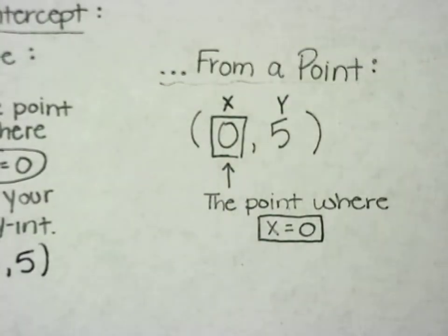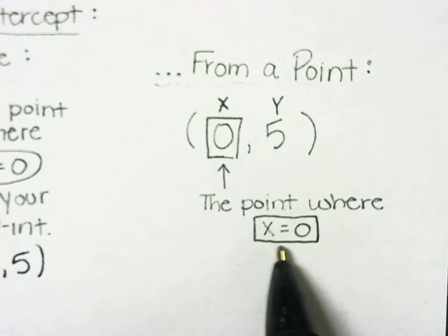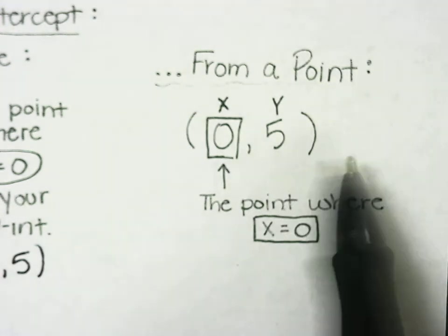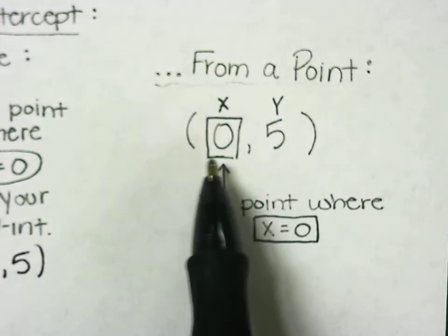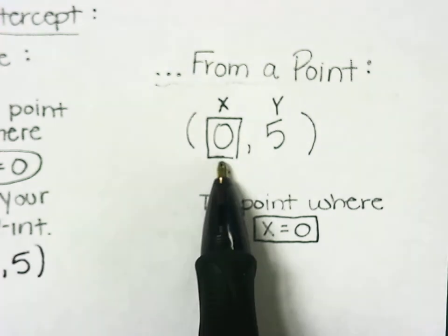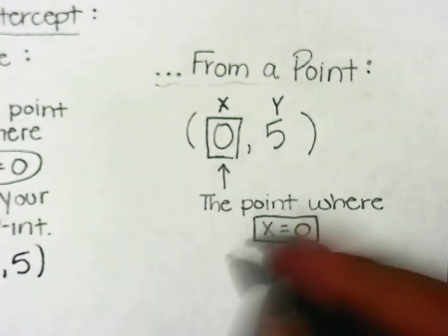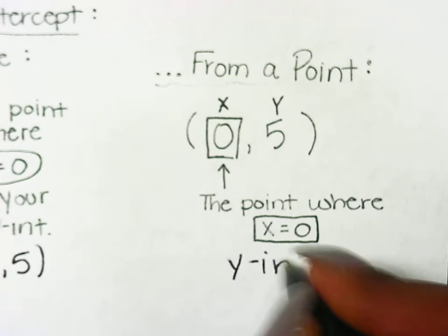Same thing when you're looking at ordered pairs. You're looking for the point where x is equal to zero. So if you have a couple of ordered pairs, you're simply looking at each x-value and trying to see which one is equal to zero. That is your y-intercept.